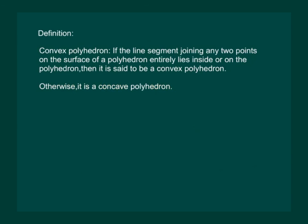Let us now define a convex polyhedron. If the line segment joining any two points on the surface of a polyhedron entirely lies inside or on the polyhedron, then it is said to be convex polyhedron. Otherwise, it is a concave polyhedron.